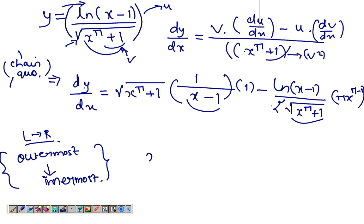Just using the formula of d over dx of x to the n, which is n x to the n minus 1. So you get a pi x to the pi minus 1 and the derivative of 1 is 0.